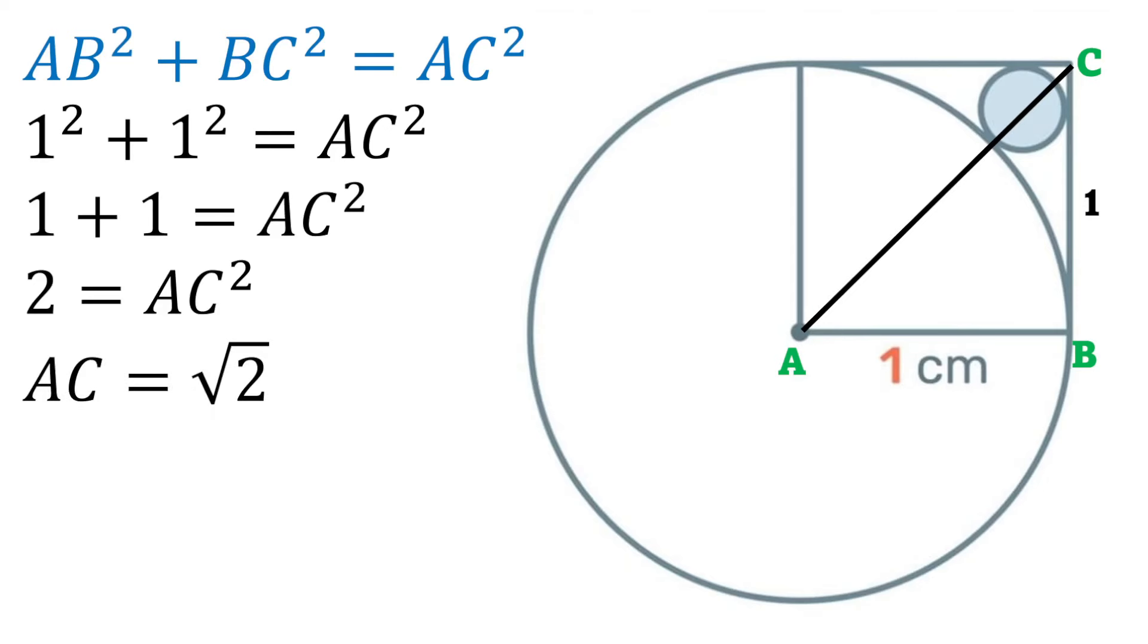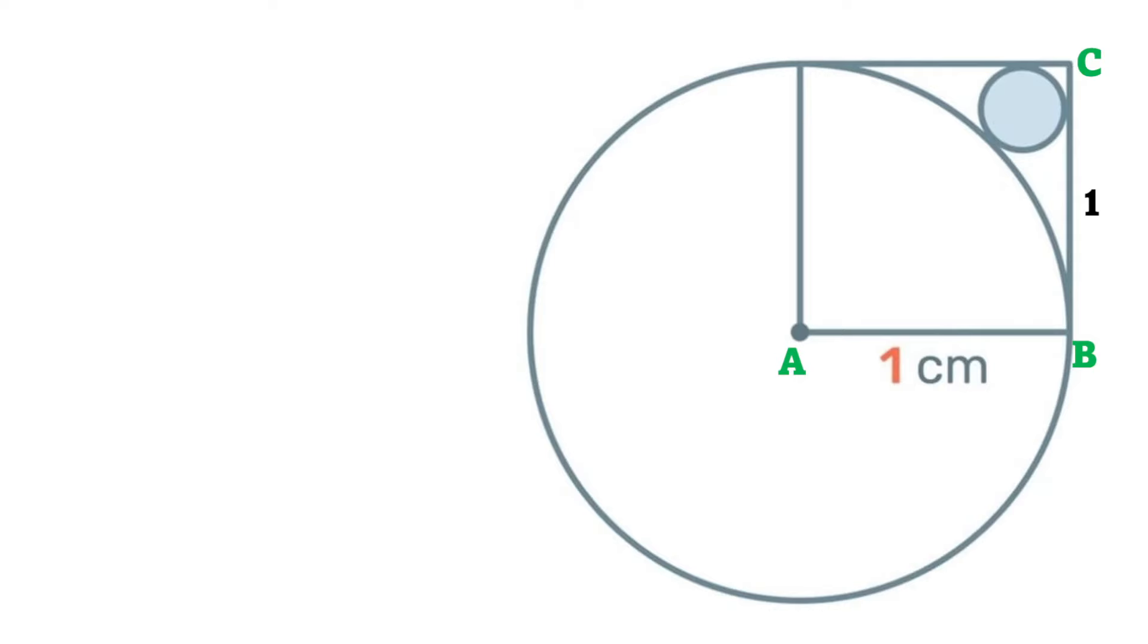So that will be two which means that AC is going to be the square root of two. Next let's focus on that tiny circle. That's going to be the radius r and that's also going to be the radius r. And if we join them and label our vertices D and E, then again by Pythagoras's theorem we'll have that the square of DE plus the square of EC is equal to the square of DC.